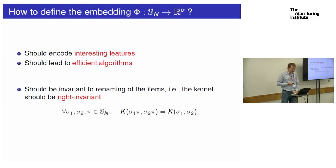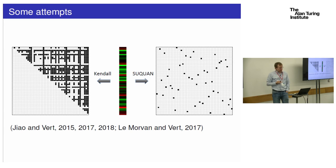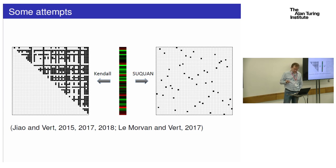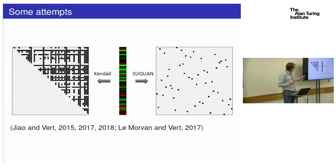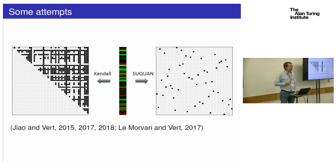That is what we call right invariance. Let me go straight to two examples of possible embeddings that we worked on with colleagues and students. I will present quickly one which we call Suquan and one which we call Kendall. In both cases, the representation of a sigma is as a matrix — a matrix of size n by n. They are very natural and standard, but I will explain why they can be interesting and what their properties are.